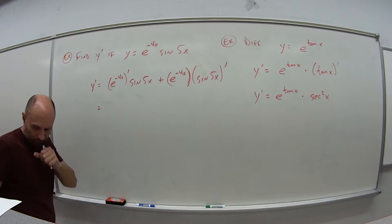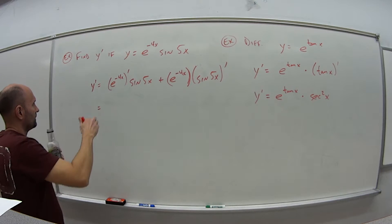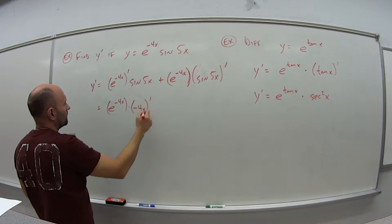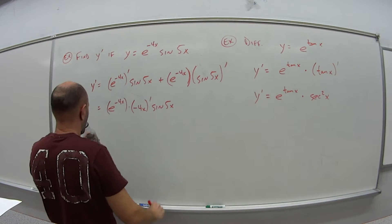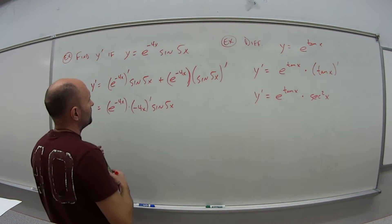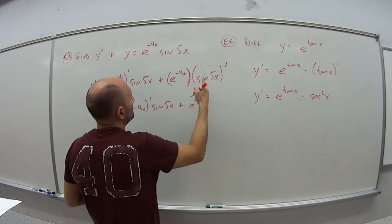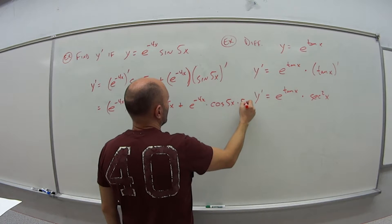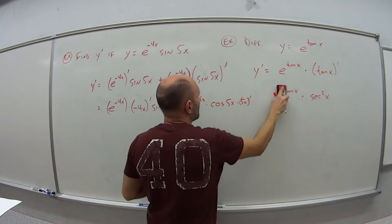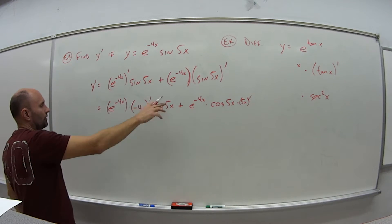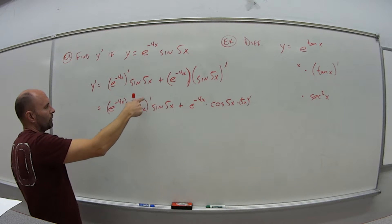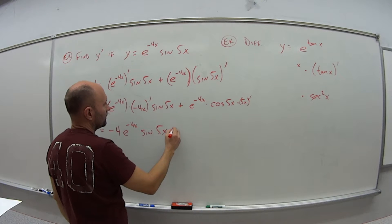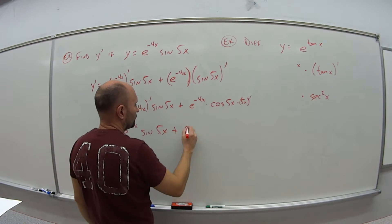The derivative of e to the minus 4x is e to the minus 4x times the derivative of the exponent, times sine of 5x. Then plus e to the minus 4x times the derivative of sine of 5x — the derivative of sine is cosine — so it's cosine of 5x, and by the chain rule we also take the derivative of 5x. The derivative of negative 4x is negative 4.